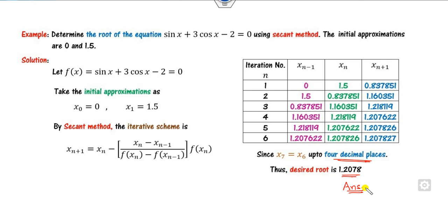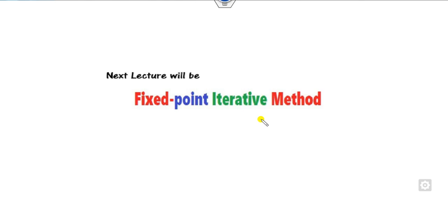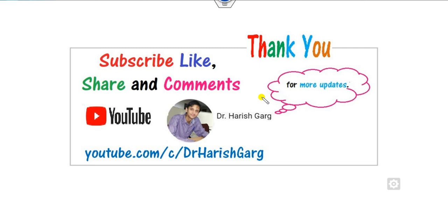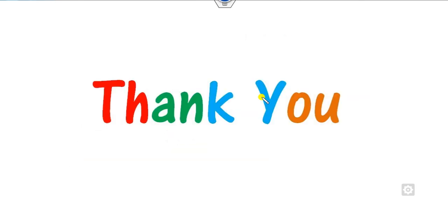This is the way to solve the secant method in a very simple manner. Just try to complete the table and you will get the answer easily. I hope you can remember this trick and appreciate this lecture. In the next lecture, we will see more examples on fixed point iterative methods and their convergence. Like, share, and comment on my video. Thank you very much, students. Happy learning always.